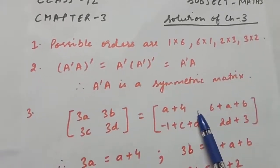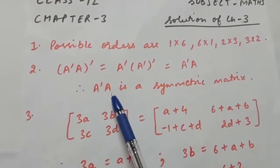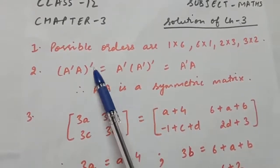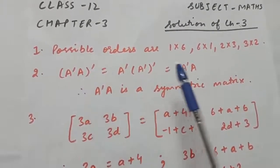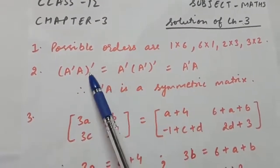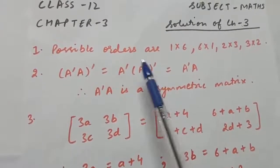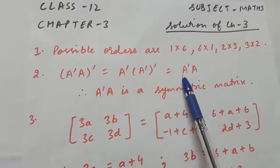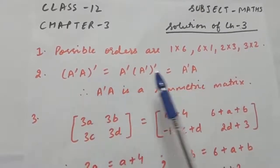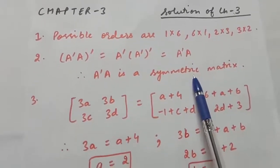Question second is to show that A transpose A is a symmetric matrix. To show this, we have to show that the transpose of (A^T A) is equal to A^T A. Taking its transpose, it will be A transpose and transpose of A transpose. Now A transpose remains as is and the second term becomes A. Therefore the transpose of this matrix equals the matrix itself, so A^T A is a symmetric matrix.